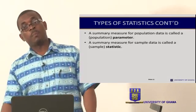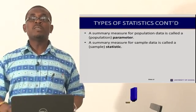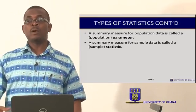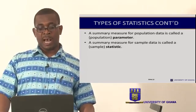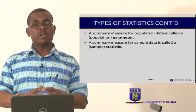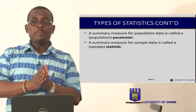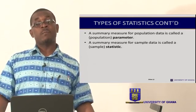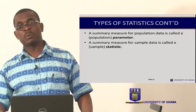Summary measures for a population are called a population parameter. When you collect data on the population, you can summarize it using, let's say, a mean. That computation you make is called a parameter, as opposed to a summary measure for a sample, which is called a statistic. So a mean from the population is called a population parameter or population mean, whereas the mean from a sample is a sample statistic called, for example, the sample mean.